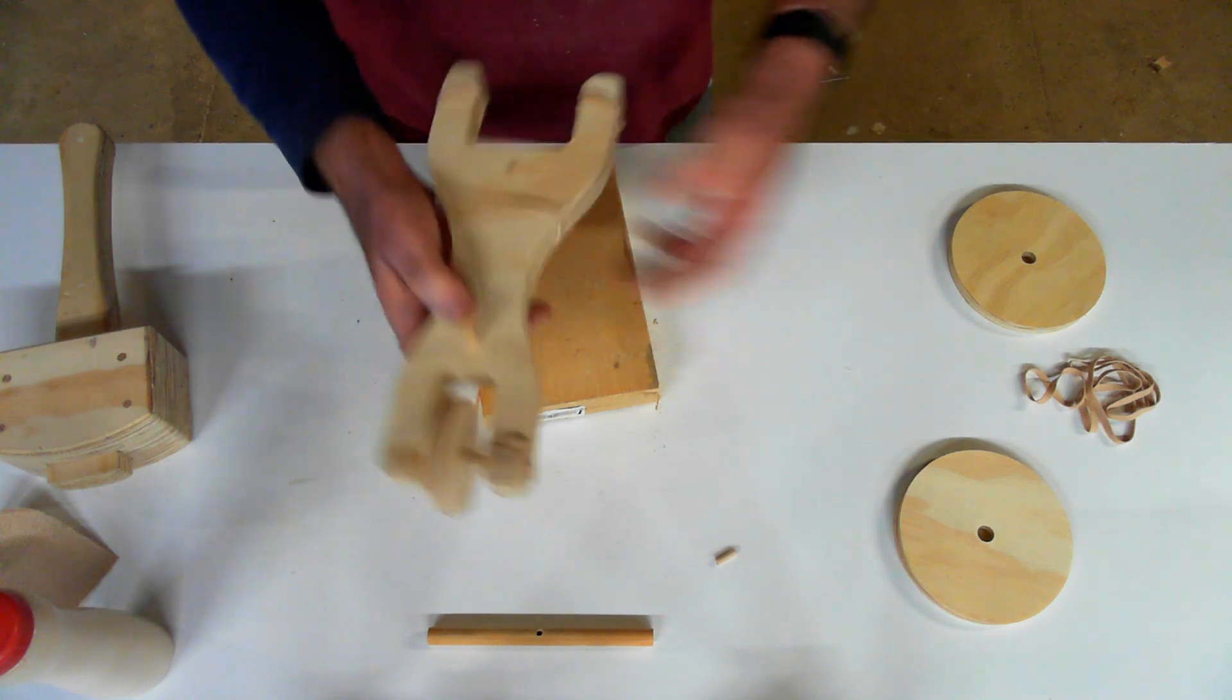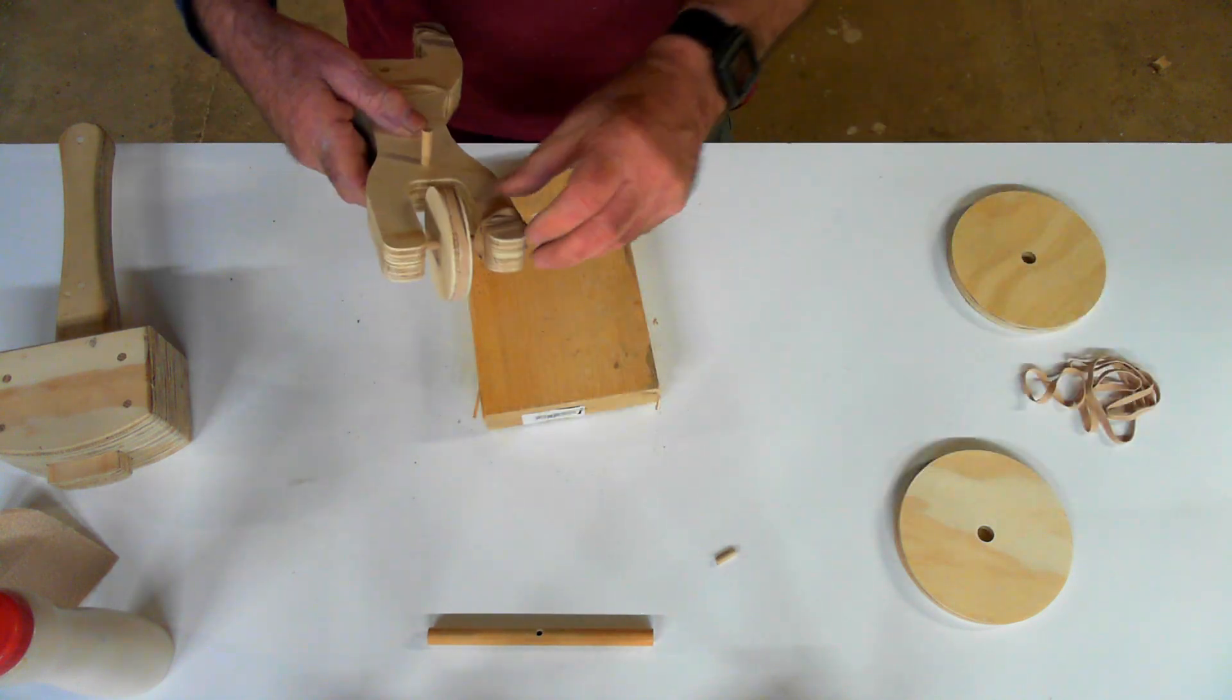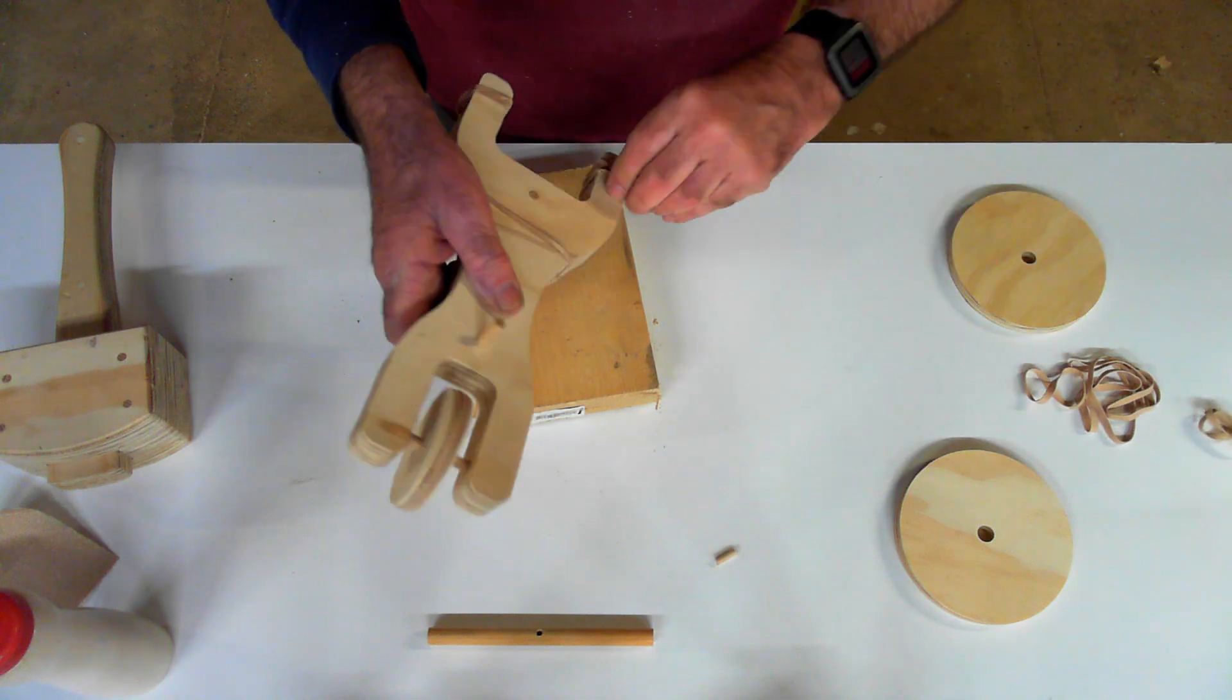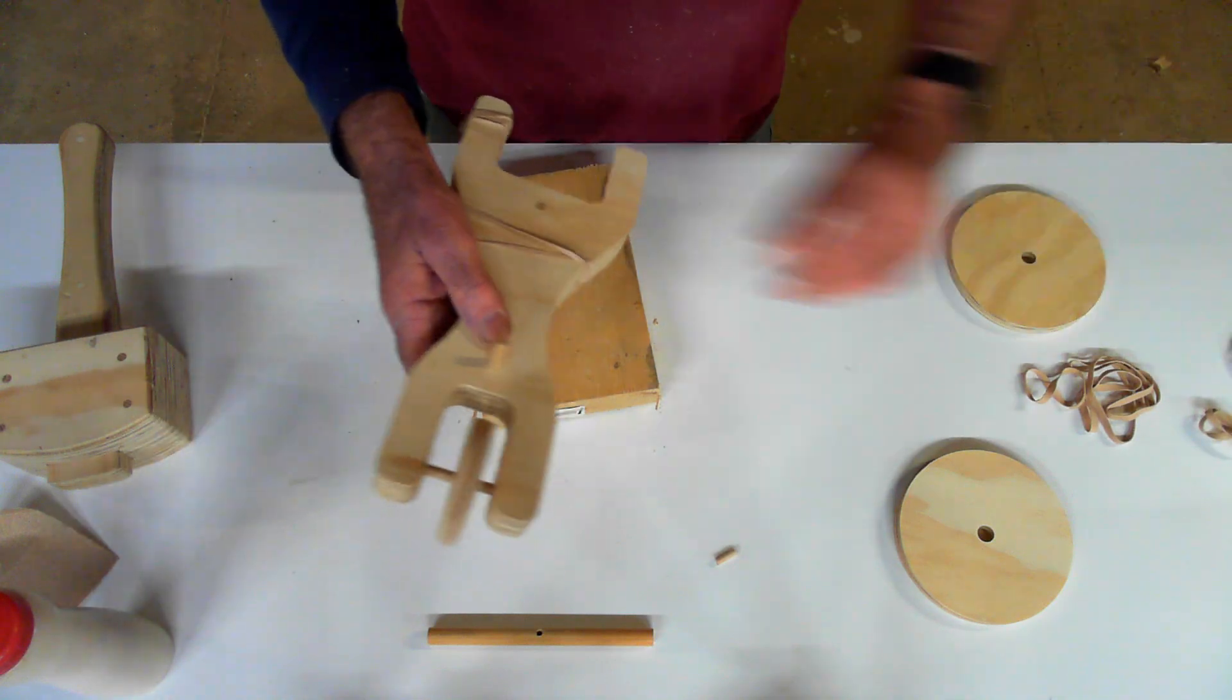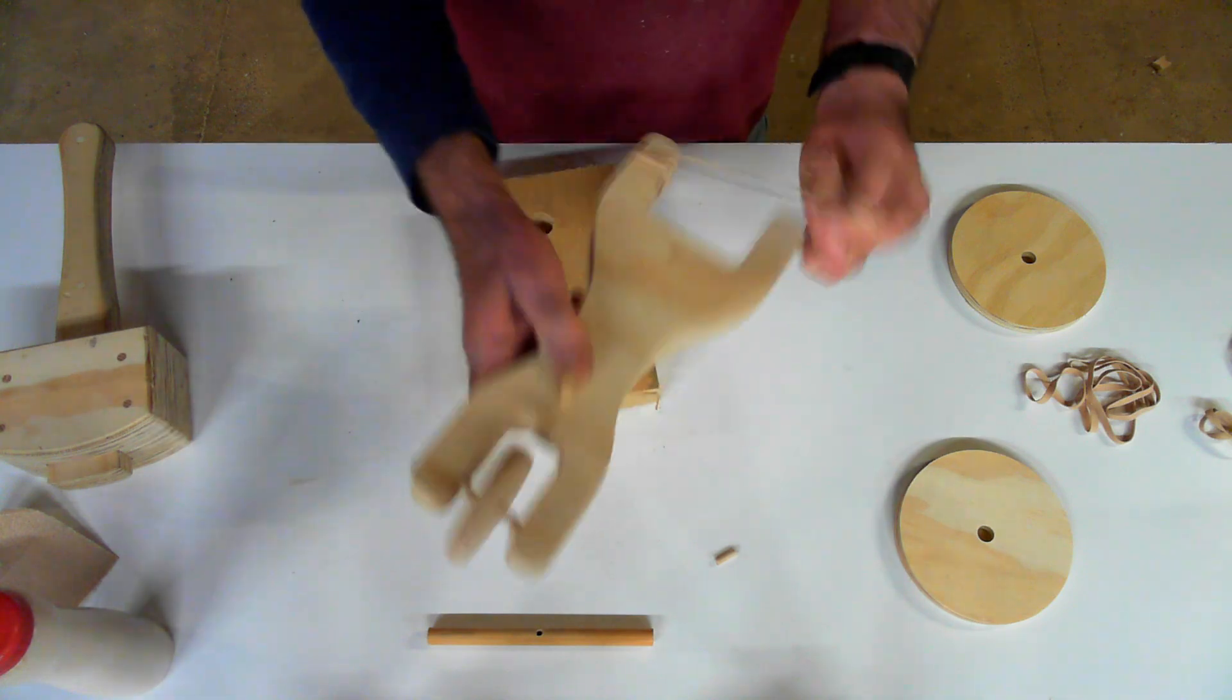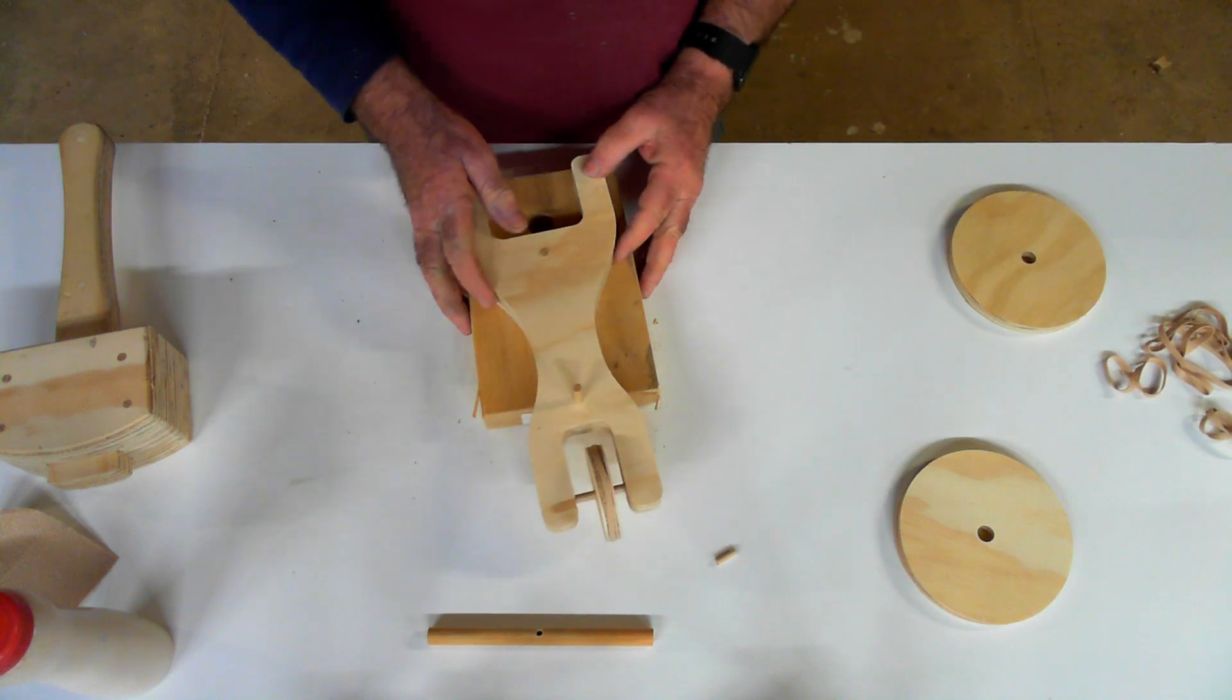And so we're going to imagine that this is a cooking show. Now we put it in the oven and miraculously it comes back out and the glue's all set. So we pop the rubber bands off and it's just like magic. Usually it takes a couple of hours for this glue to set.